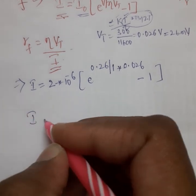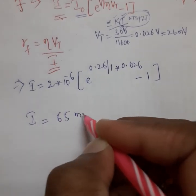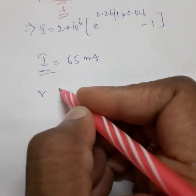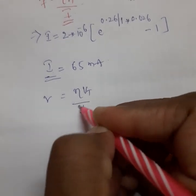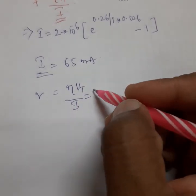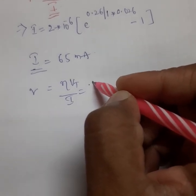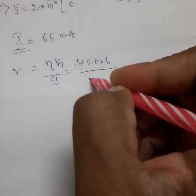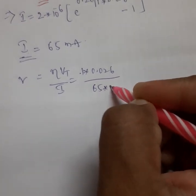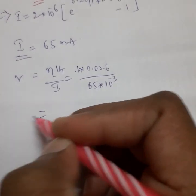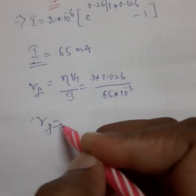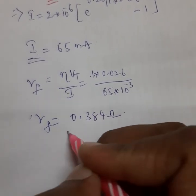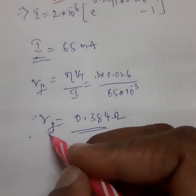Calculating the forward current: I = 2 × 10⁻⁶ · e^(0.26 / (1 × 0.026)) − 1, which gives I = 65 milliamperes. Substituting into the dynamic resistance formula: r_f = η·Vt / I = 1 × 0.026 / (65 × 10⁻³) = 0.384 ohms. This is the forward dynamic resistance.